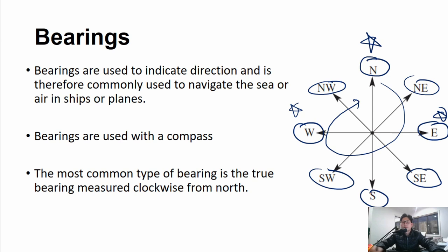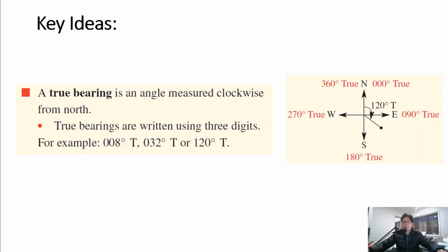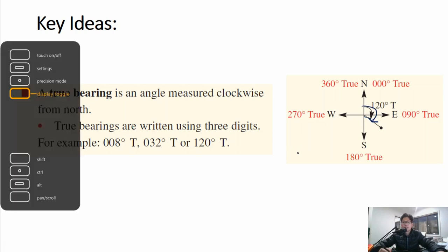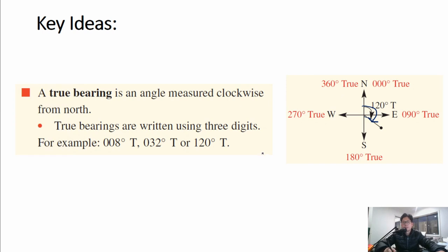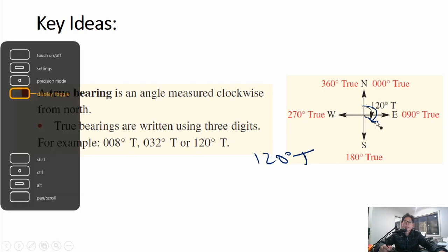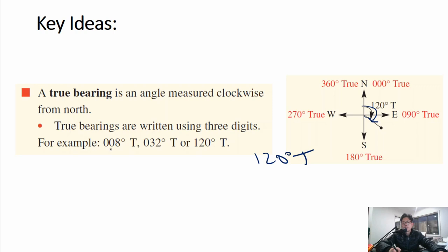This will all make more sense in our example problems. A true bearing is an angle measured clockwise from north. If you look at this diagram, we start from north and go clockwise — that is 120 degrees, so we would read that as 120 degrees true. True bearings are written using three digits. Even if it is a one-digit number, we put two zeros in front — so instead of writing 8 degrees T, we write 008 degrees T. Same with a two-digit number, we add a zero in front. Three-digit numbers stay as they are.